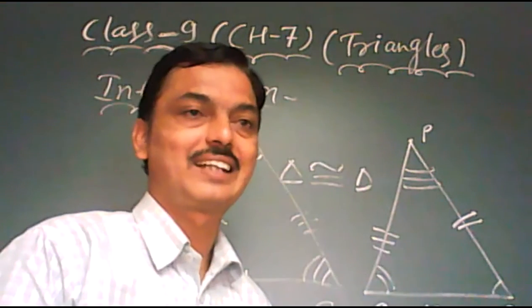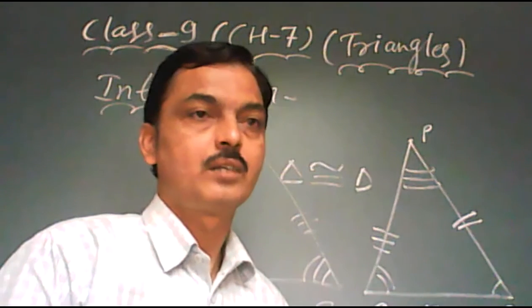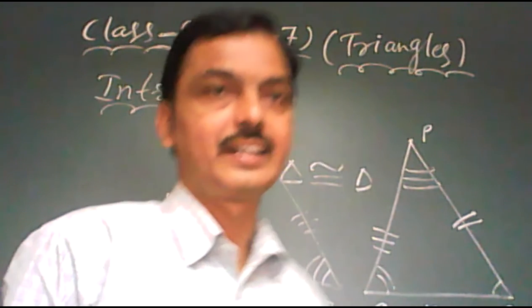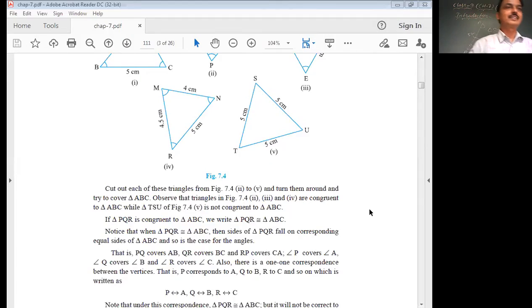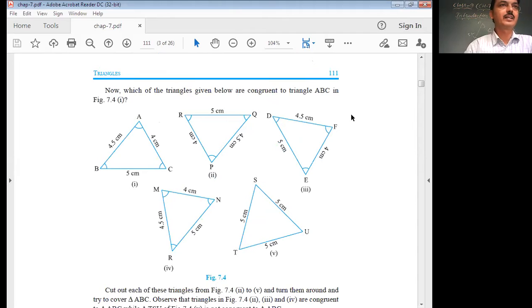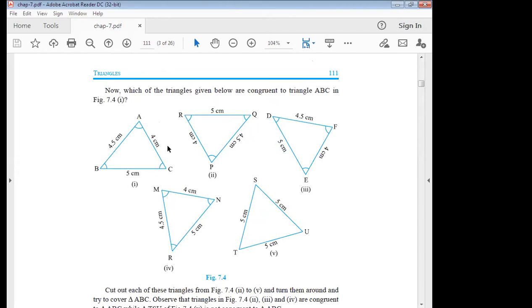Now, look at the screen. Look at the screen here, and see this example given here. Which of the triangles given below are congruent to triangle ABC? Here the triangle ABC has the dimensions 4.5, 4 and 5 respectively.